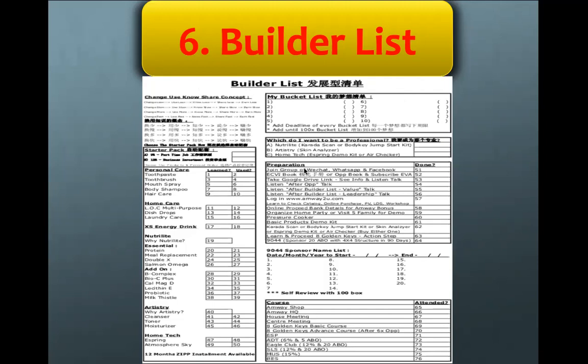Task 51: join WeChat, WhatsApp, and Facebook groups. WeChat and WhatsApp are normally for polls, 3S, marketing, demo, or sponsoring updates. Facebook is for posting motivation talks and videos related to Amway, and sharing information directly to the Facebook group. Task 52: the eCVI book, which can be bought at the offline center for around 60 ringgit — it includes OPP content and a planner inside. There is also EVA, an app to record your planner and follow-up schedule like a calendar — subscribe to it and refer to your upline.